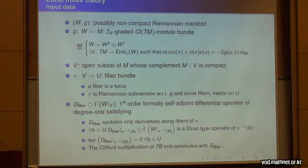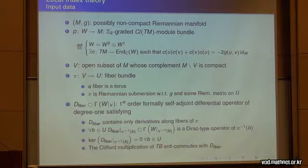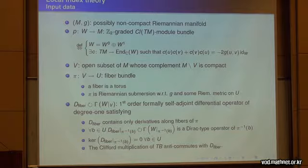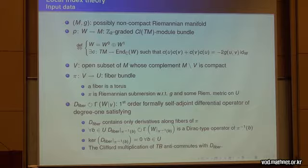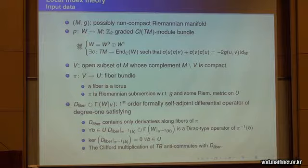The fifth and final input datum is D_fiber, a first-order formally self-adjoint differential operator of degree 1 satisfying four conditions. First, it contains only derivatives along the fibers of φ, so we can restrict D_fiber to each fiber. For each base point b, the restriction of D_fiber to the fiber at b is a Dirac-type operator — meaning a first-order formally self-adjoint differential operator whose principal symbol is given by the Clifford multiplication of the tangent vector of the fiber.